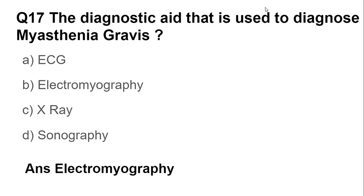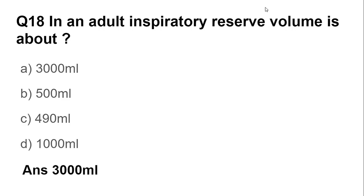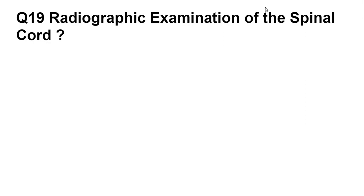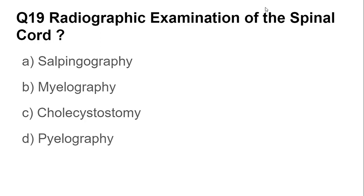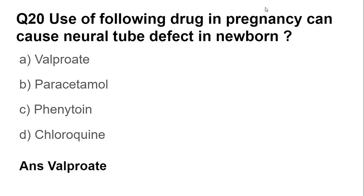Question number eighteen: in an adult, the inspiratory reserve volume is 3,000 ml. Question number nineteen: the radiographic examination of the spinal cord is called myelography. Question number twenty: the drug used during pregnancy that can cause neural tube defects in a newborn is valproate — the first anti-epileptic drug, which increases the risk of spina bifida and neural tube defects.